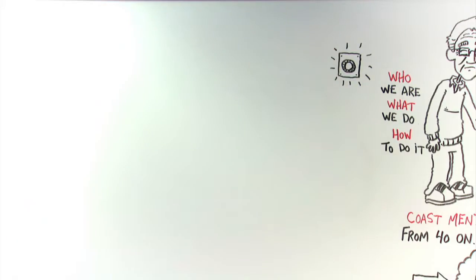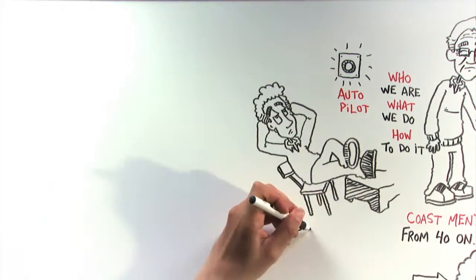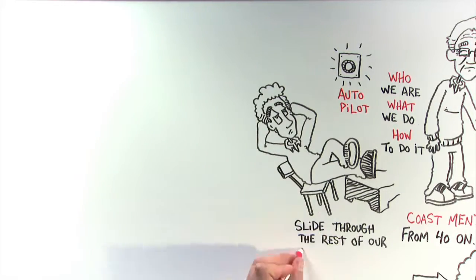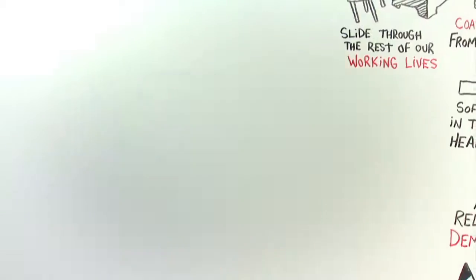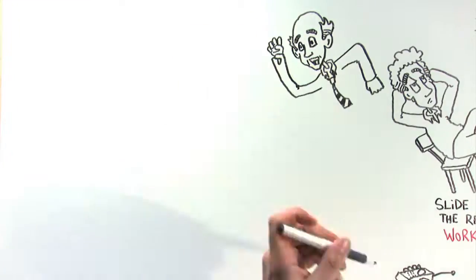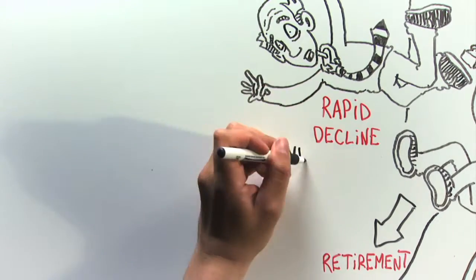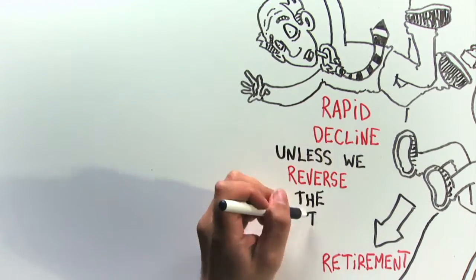It turns out that far too many of us then turn on the autopilot, kick up our feet, relax, and slide through the rest of our working lives. That leads to a long, slow slide toward retirement. Then we retire, and for many of us, it's a rapid decline. That is, unless we start to reverse the trend.